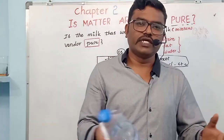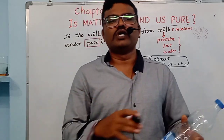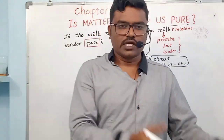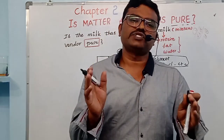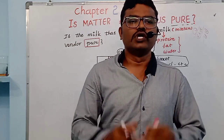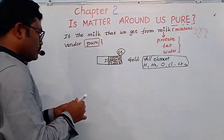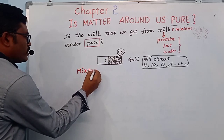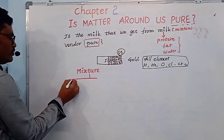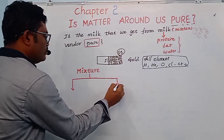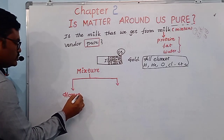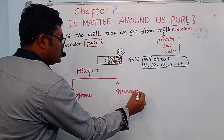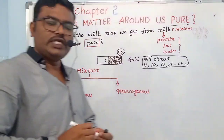Soft drinks and cool drinks also contain more than two pure substances and are mixtures. Now we discuss the types of mixtures. Mixtures are of two types: one is homogeneous mixture and the second one is heterogeneous mixture.